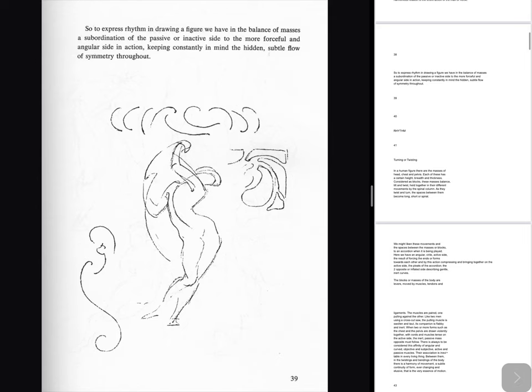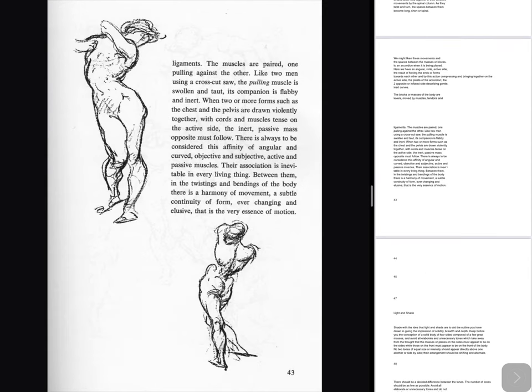Turning or twisting: In a human figure there are the masses of head, chest and pelvis. Each of these has a certain height, breadth and thickness. Considered as blocks, these masses balance, tilt and twist, held together in their different movements by the spinal column. As they twist and turn, the spaces between them become long, short or spiral. We might liken these movements in the spaces between the masses to an accordion when it is being played — here we have an angular, virile, active side, the result of forcing the ends or forms towards each other and compressing the pleats of the accordion, with the two opposite or inflated sides describing gentle, inert curves. The blocks or masses of the body are levers, moved by muscles, tendons and ligaments. The muscles are paired, one pulling against the other. Like two men using a cross-cut saw, the pulling muscle is swollen and taut, its companion is floppy and inert. When two or more forms such as the chest and the pelvis are drawn violently together, with cords and muscles tense on the active side, the inert, passive mass opposite must follow. There is always to be considered this affinity of angular and curved, objective and subjective, active and passive muscles. Their association is inevitable in every living thing. Between them, in the twistings and bendings of the body there is a harmony of movement, a subtle continuity of form, ever-changing and elusive. That is the very essence of motion.